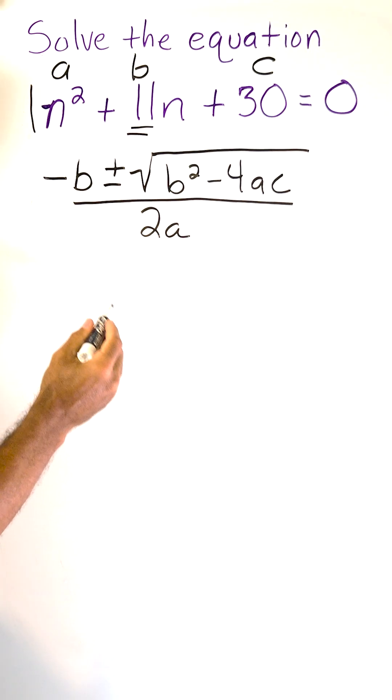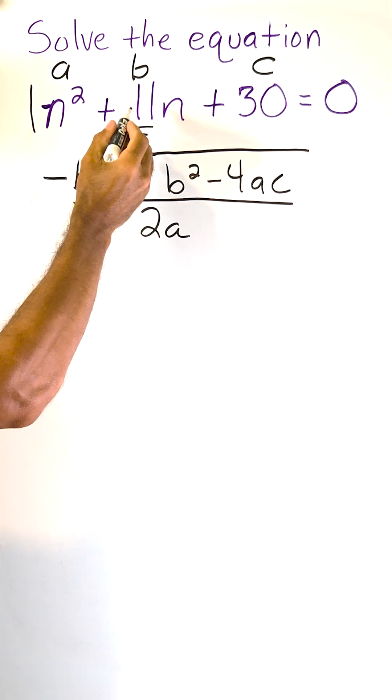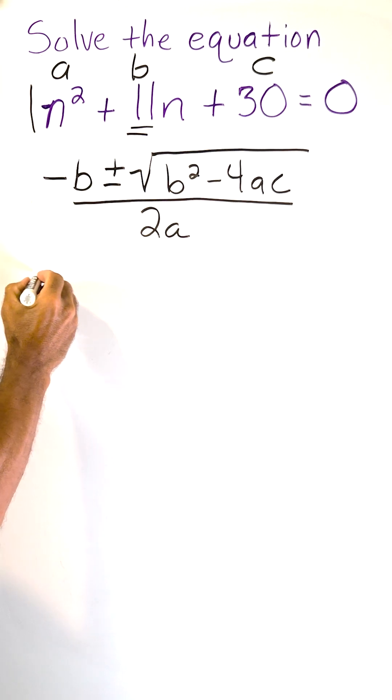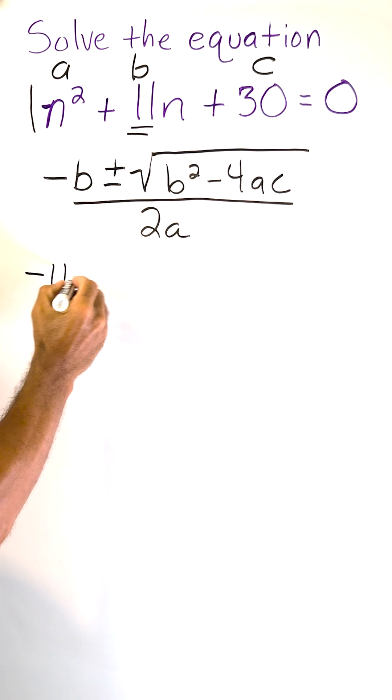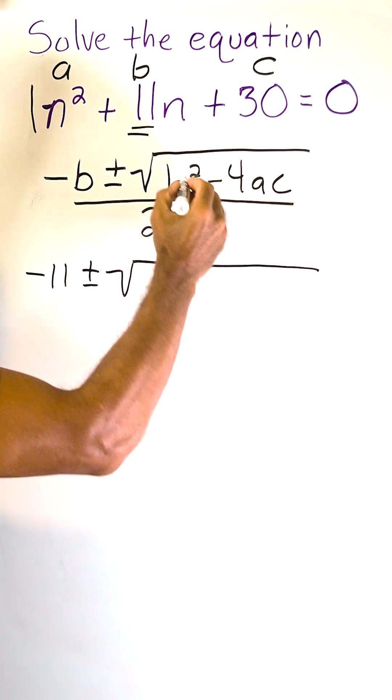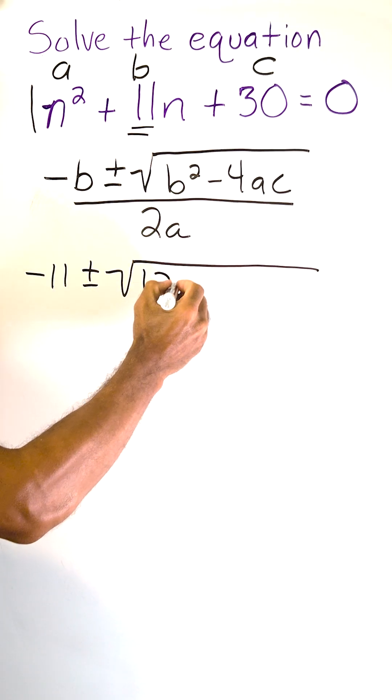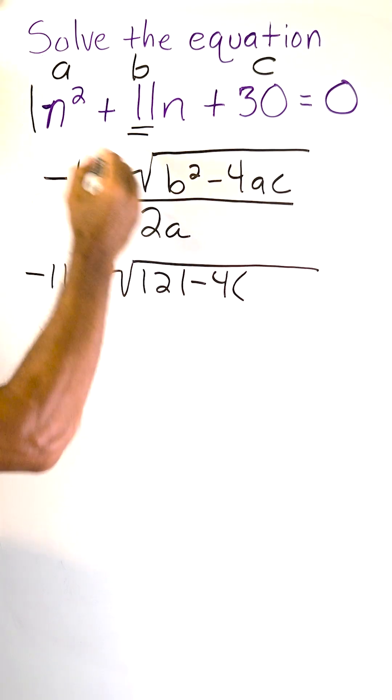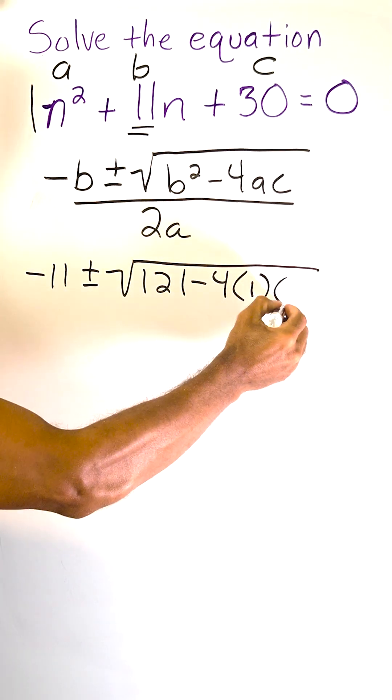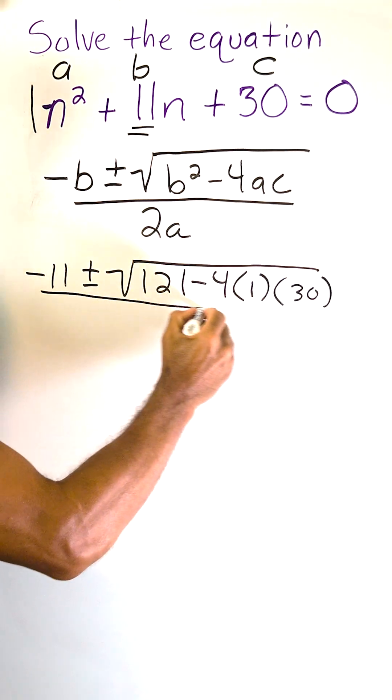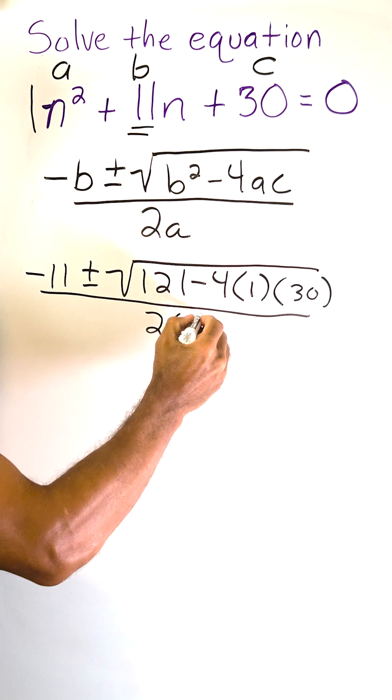So let's substitute those values into our equation here. Here we have a negative B and B is positive 11. So we're going to do the opposite of that, which is negative 11. So we have negative 11 plus or minus the square of B, which is 11 times 11. And that makes 121 minus 4 times A, which is positive 1, times C, which is 30. And we have to divide that by 2 multiplied by A, which in this case is positive 1.